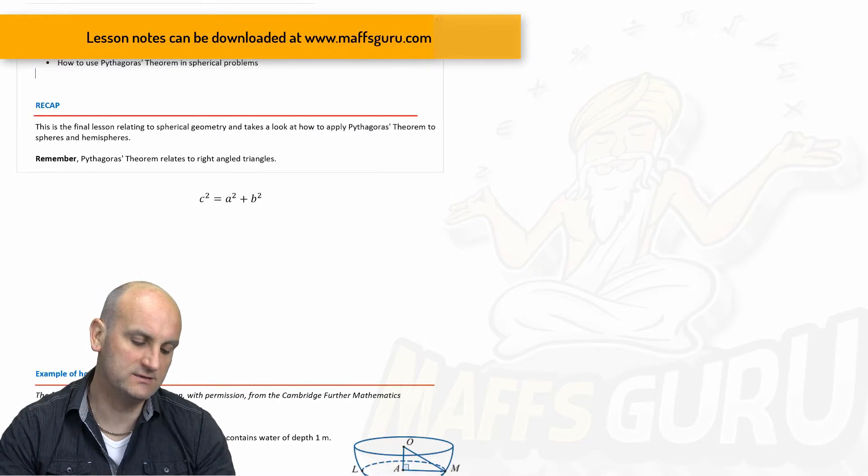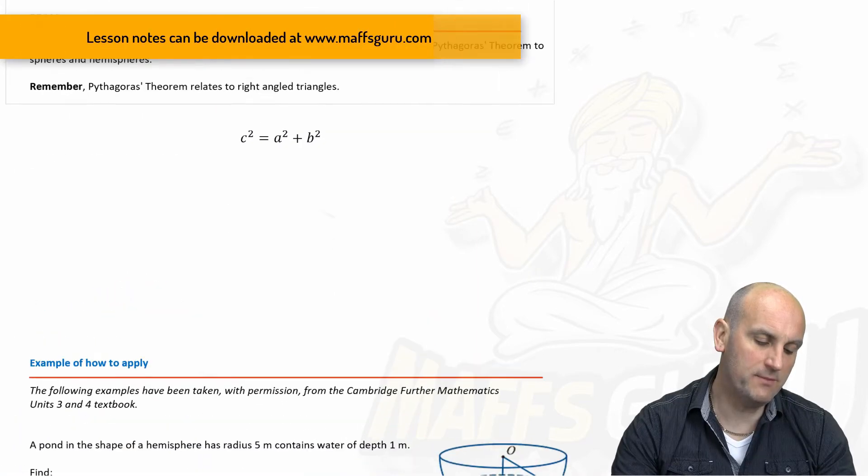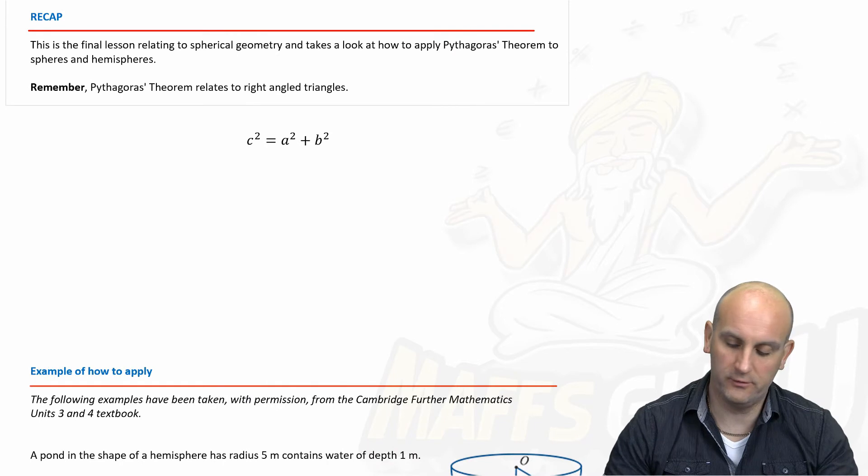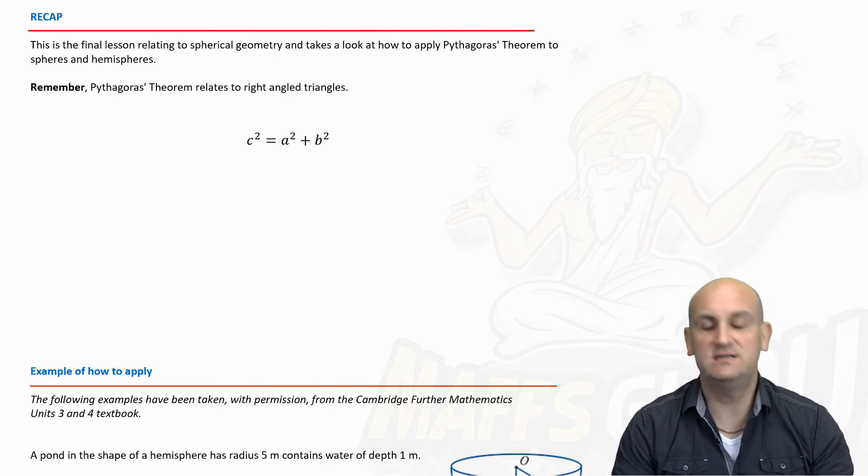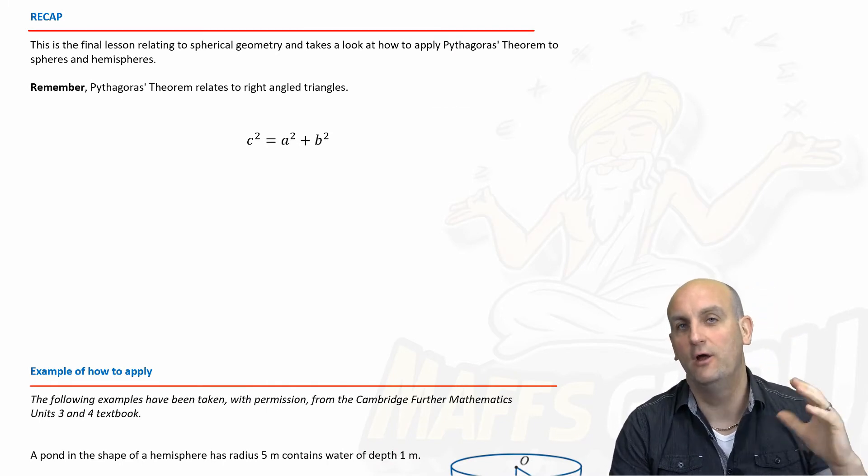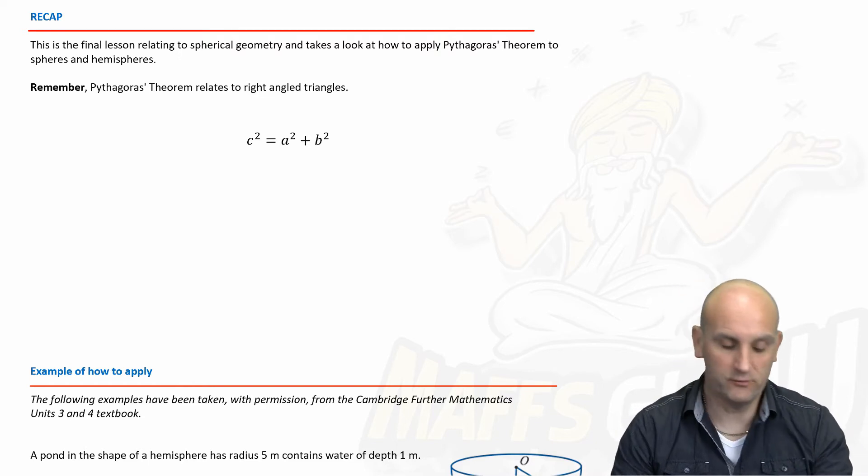Okay, Pythagoras' theorem in spheres. We have met Pythagoras' theorem pretty much all the way through this course and we know that c² = a² + b². It helps us find the length of lines for right angle triangles.